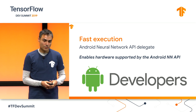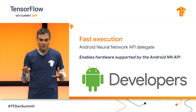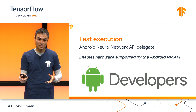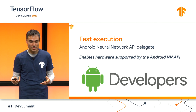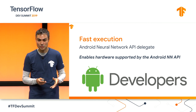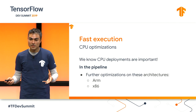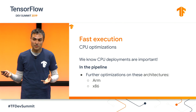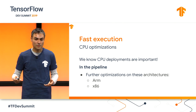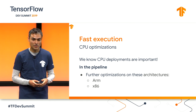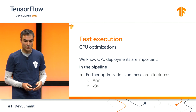The final delegate is the Android Neural Network API, which will allow you to execute on any other hardware that Android NNAPI supports — it should be transparent for you. CPU is still very important for many use cases, as most devices have some form of a CPU, so we are targeting further improvements on ARM and x86 architectures.